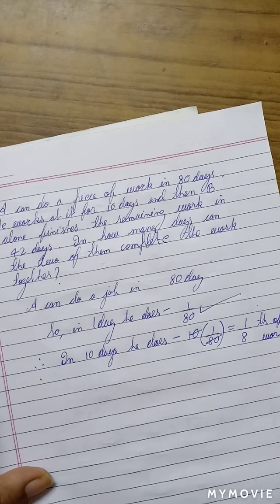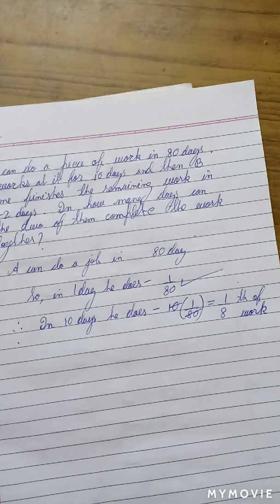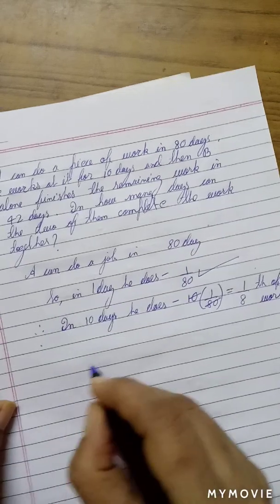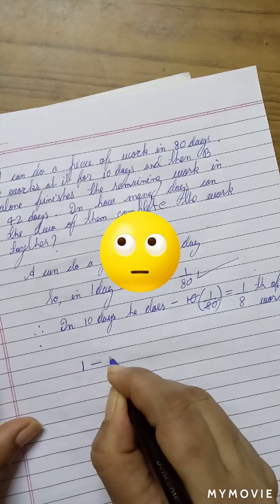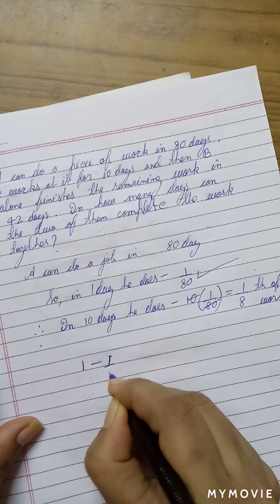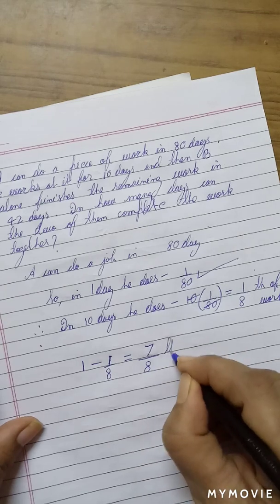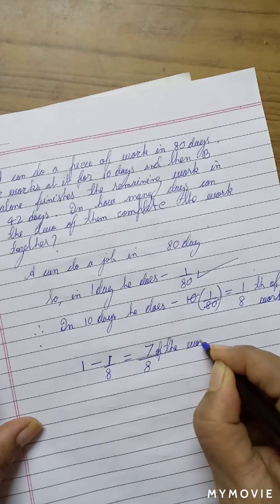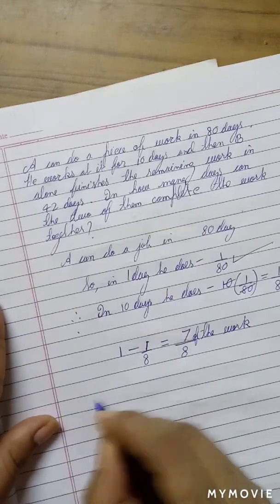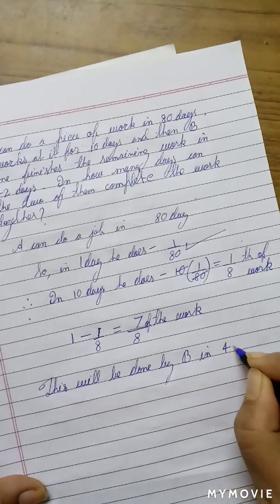We conclude that before A left, he did 1 eighth of the work. What fraction of the work is left? If we assume 1 is the whole work and 1 eighth part has been done, we are left with 7 eighth of the work. This will be done by B in 42 days.